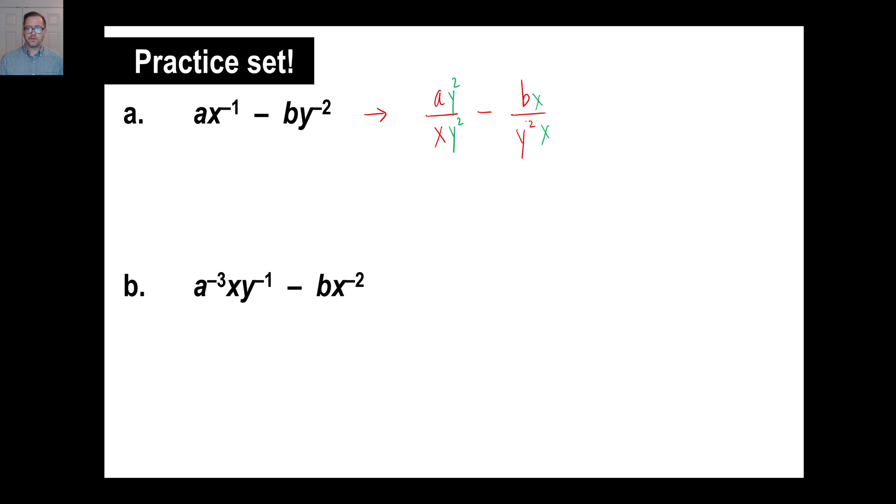So X and then X. It doesn't matter what order these are in. X can go to the front of that or whatever. So let's just call it XY² for our denominator. And we have AY² minus BX. And there we go. And that's our first one.